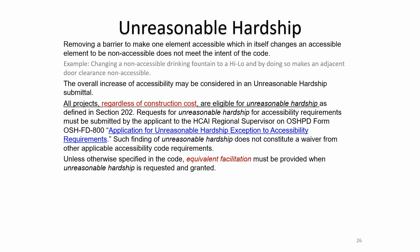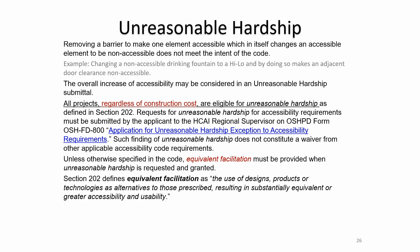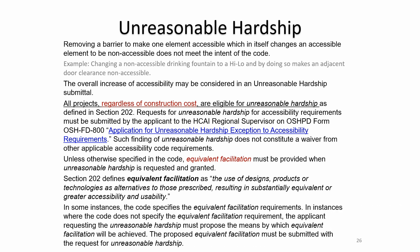Unless otherwise specified in the code, equivalent facilitation must be provided when unreasonable hardship is granted. Equivalent facilitation is defined as the use of designs, products, or technologies as alternatives to those prescribed, resulting in substantially equivalent or greater accessibility and usability. In some instances the code specifies the equivalent facilitation requirements; in others, the applicant requesting the unreasonable hardship must propose the means by which equivalent facilitation will be achieved.